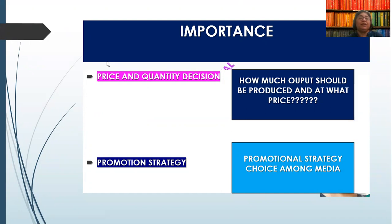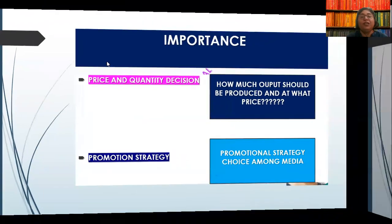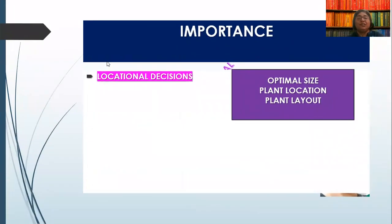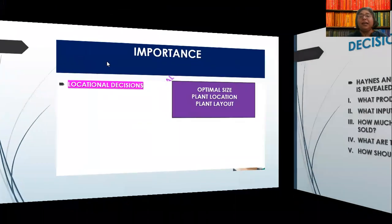We have to do advertising — using newspapers, print media, hoardings, TV, and other channels. We have to decide the promotional strategy. In the same way, we have to set up our unit where raw material is available, along with market access and infrastructure. We decide where our unit should be located and how to use production capacity. All of these things make managerial decision making very vital.